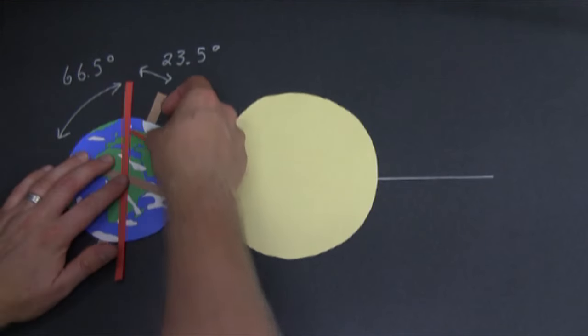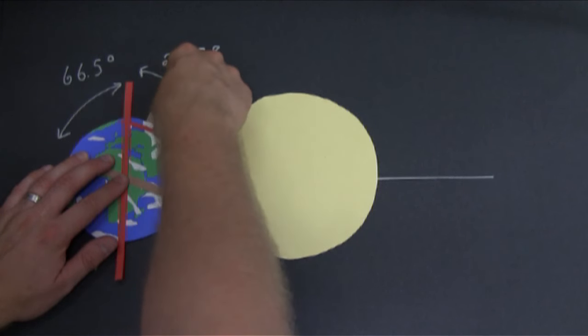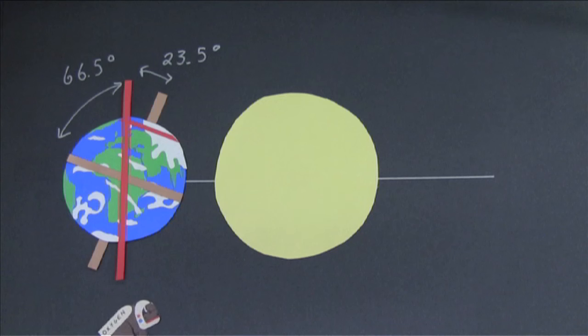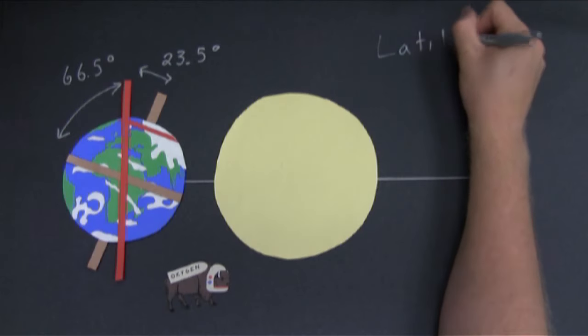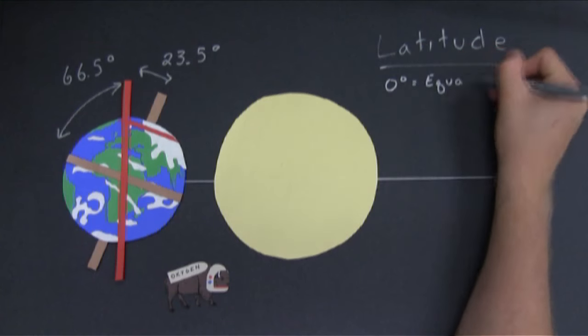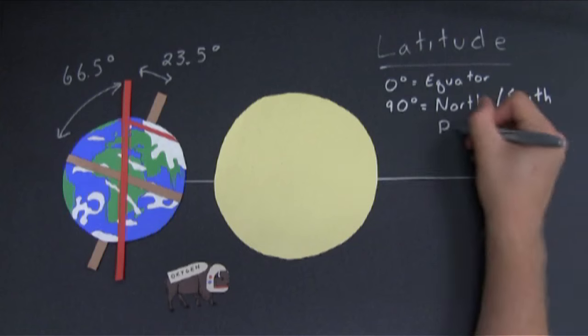We can draw a circle around the Earth at the point where the line perpendicular to the orbital plane touches the Earth's surface. This circle is 66.5 degrees of latitude north of the equator. Wait, latitude? What's that? Latitude is a measure of how far north or south you are from the Earth's equator. If you're zero degrees, then you're right here on the equator. If you're 90 degrees north or south, you're on one of the poles.